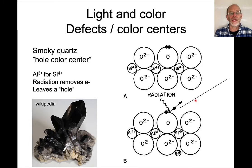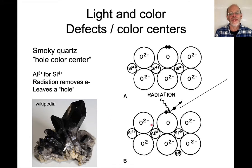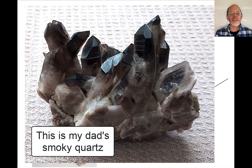Smoky quartz has a hole color center. Radiation drives off an electron from an oxygen atom close to an aluminum atom, leaving a hole, so the energy levels in this region absorb many different wavelengths of light and cause the quartz to look black. My dad used to work at Oak Ridge National Lab investigating radiation effects on chemical catalysts. One day he took clear quartz crystals, irradiated them with a gamma source, and turned them smoky — so we have some artificially smoky quartz as a family heirloom.